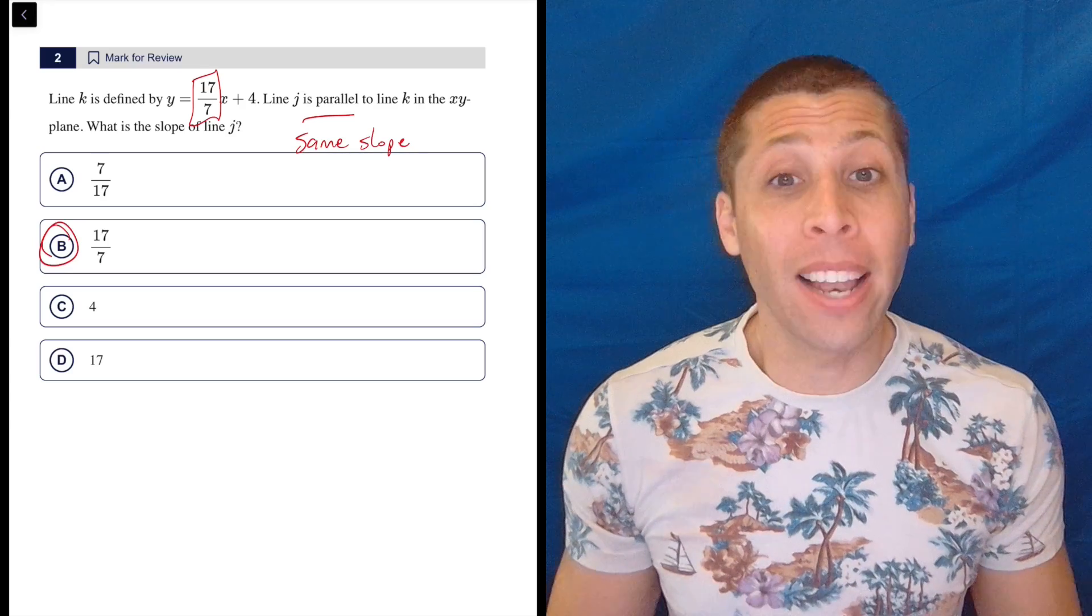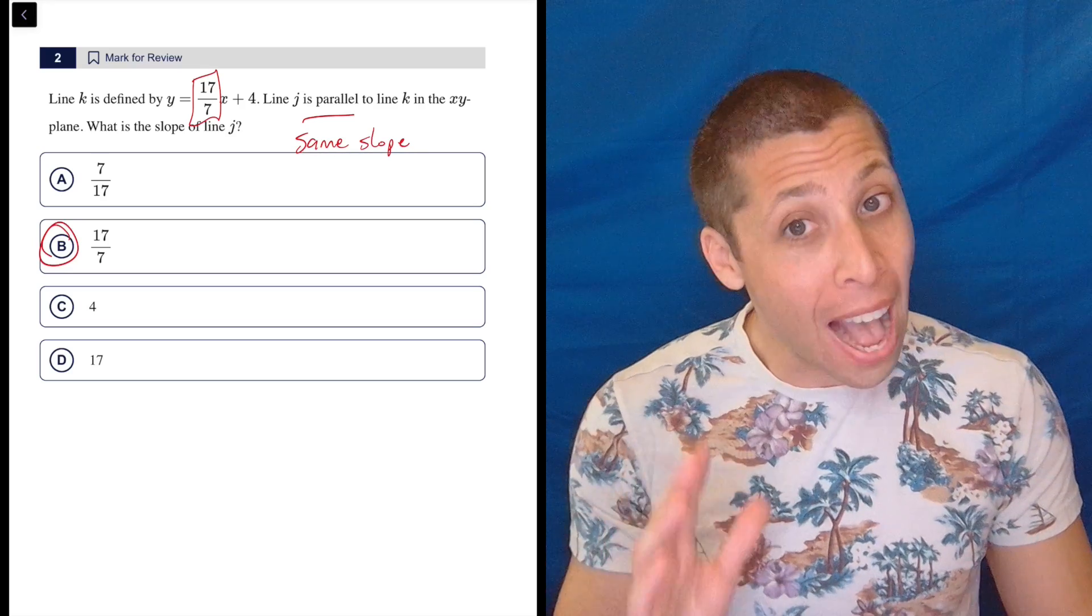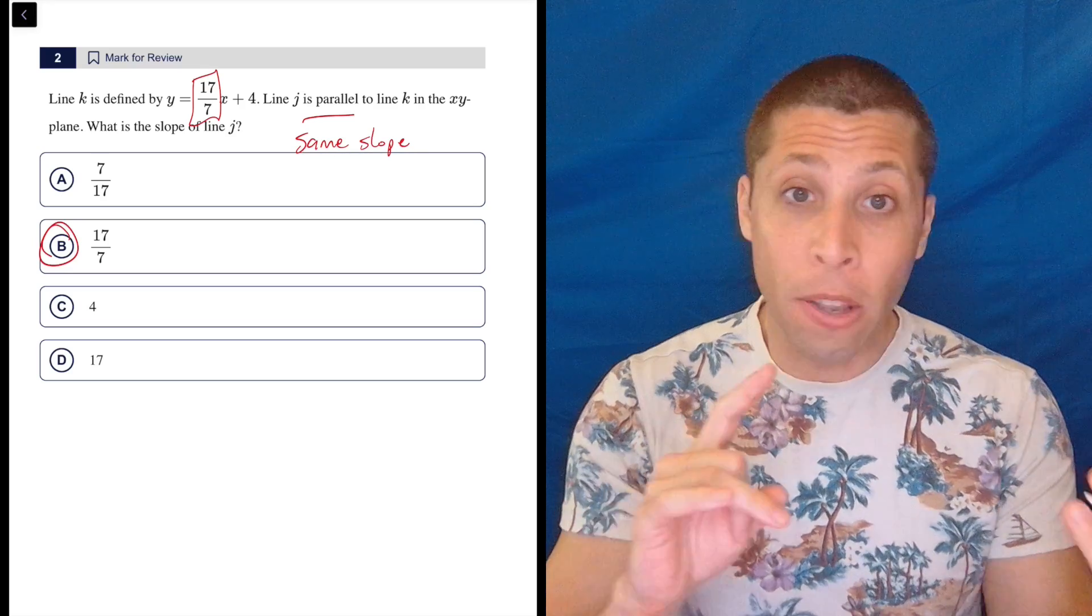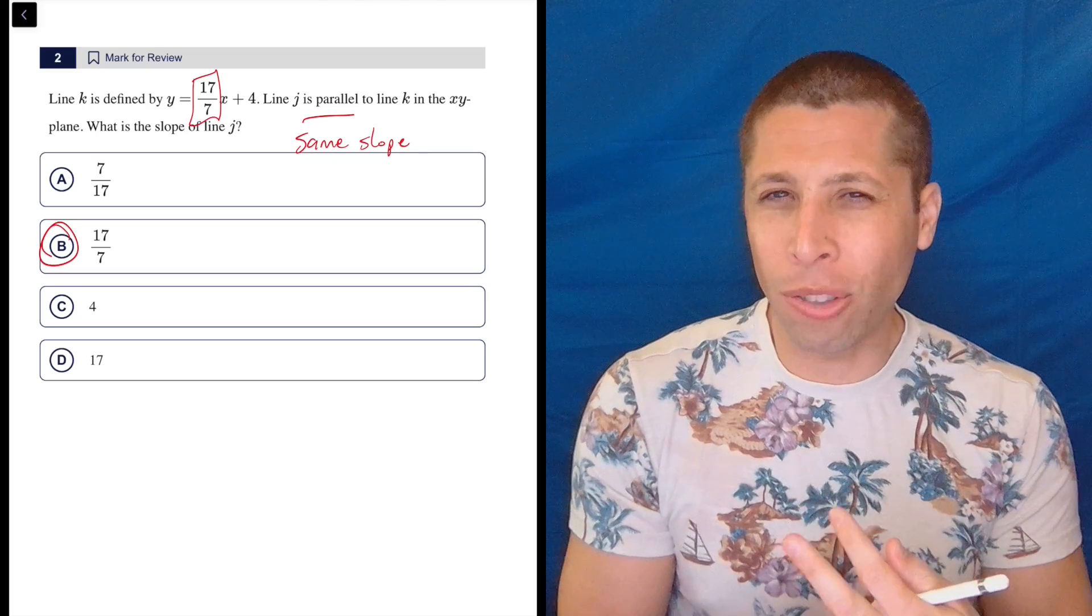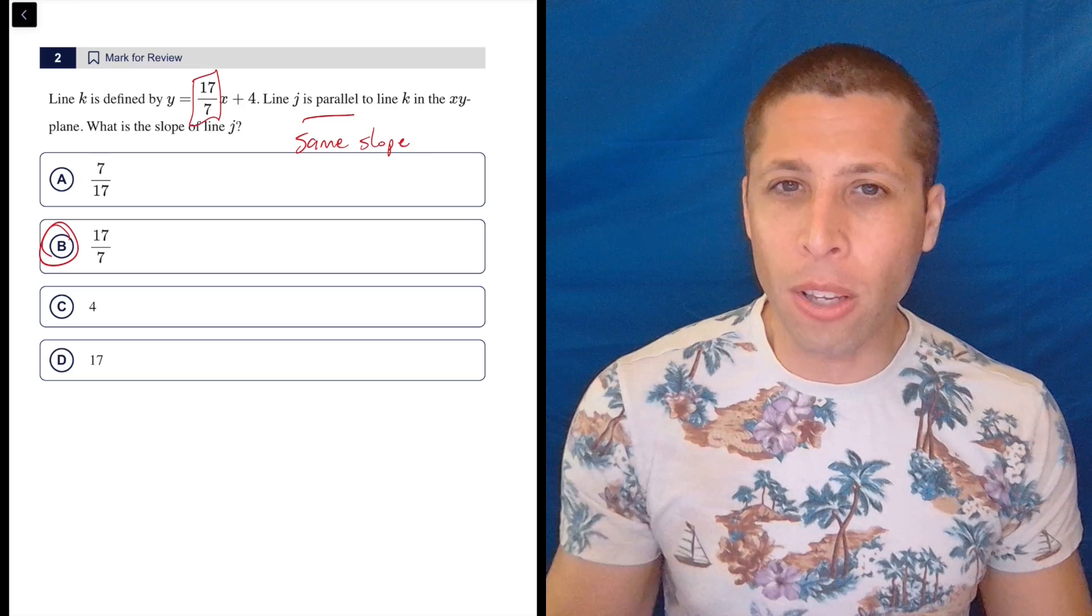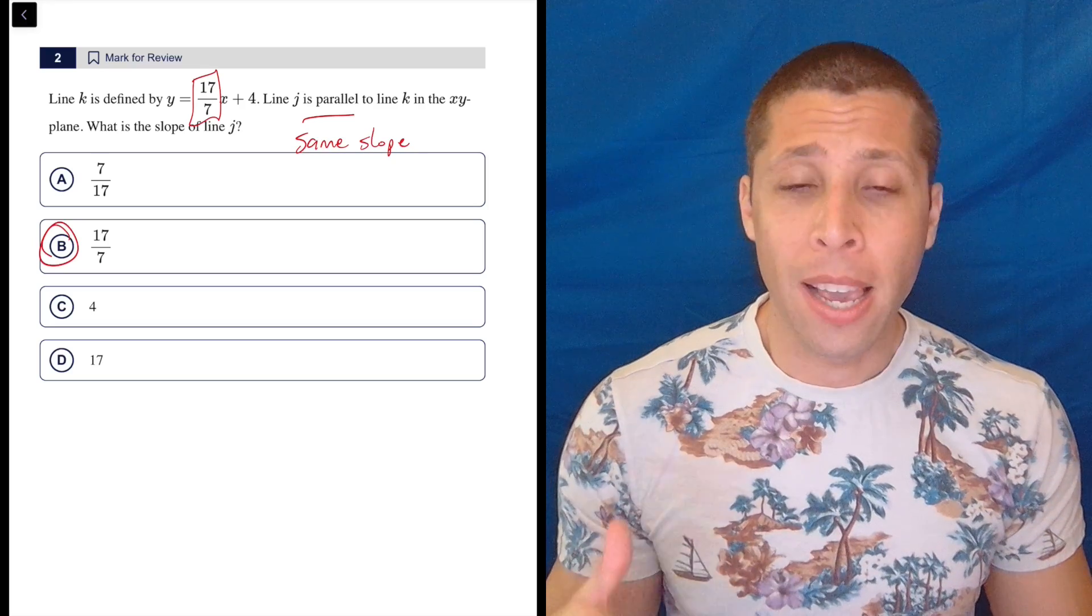This is 10 seconds, right? This has to be that fast. And so there's a memorization component. You do need to know this thing about parallel lines. But also, there's just an interpretive component, right? Can you understand that that's all they're asking in just a few seconds?